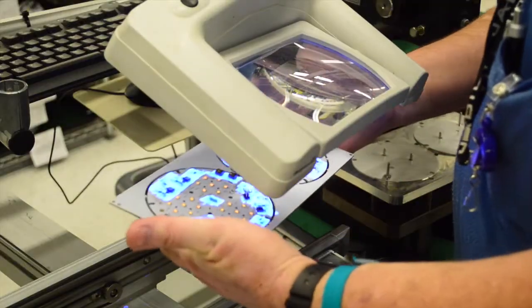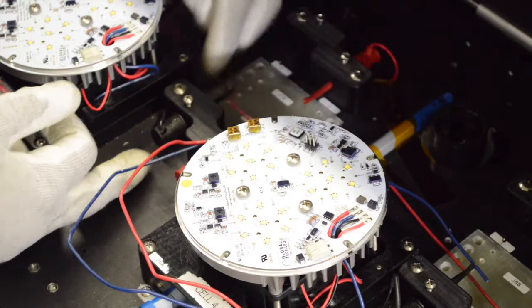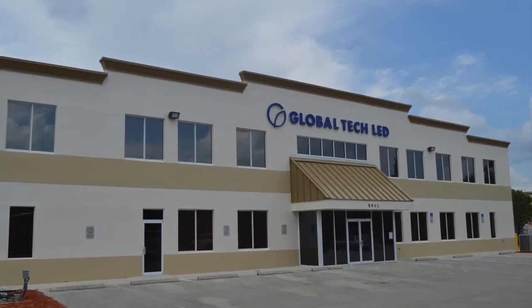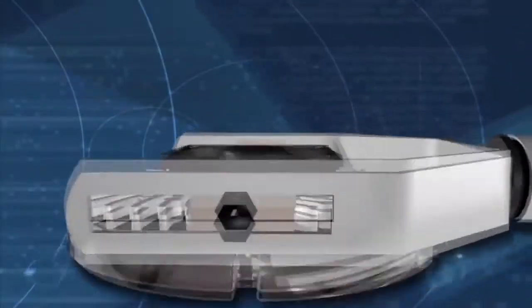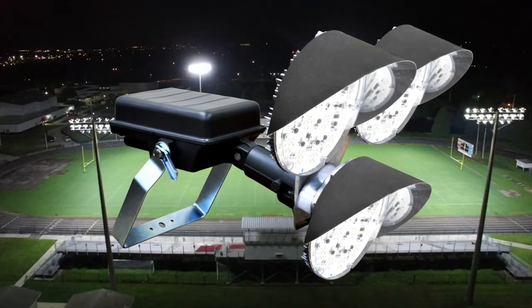Jabil Circuit produces our Solstice LED modules in St. Petersburg, Florida where they are then sent to Global Tech LED headquarters in Bonita Springs, Florida for assembly into retrofit kits and new fixtures.